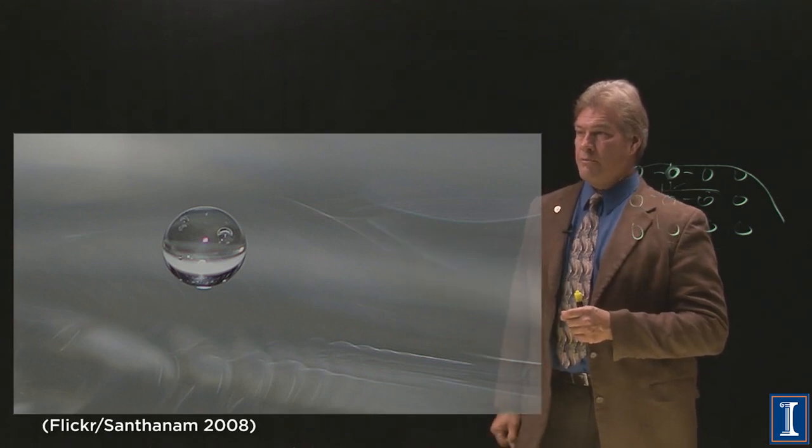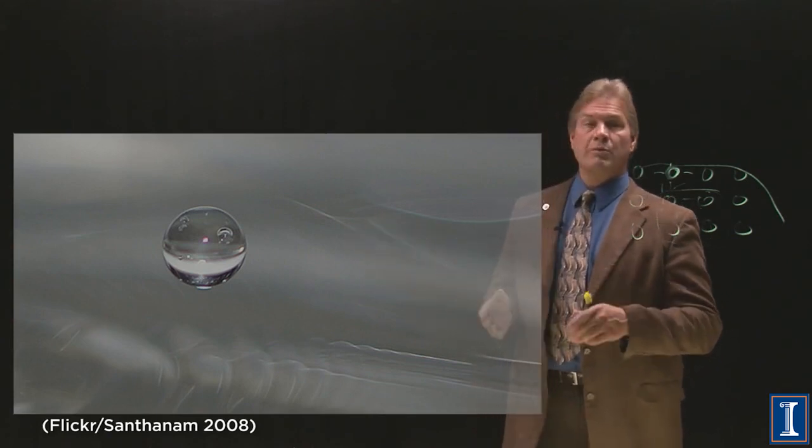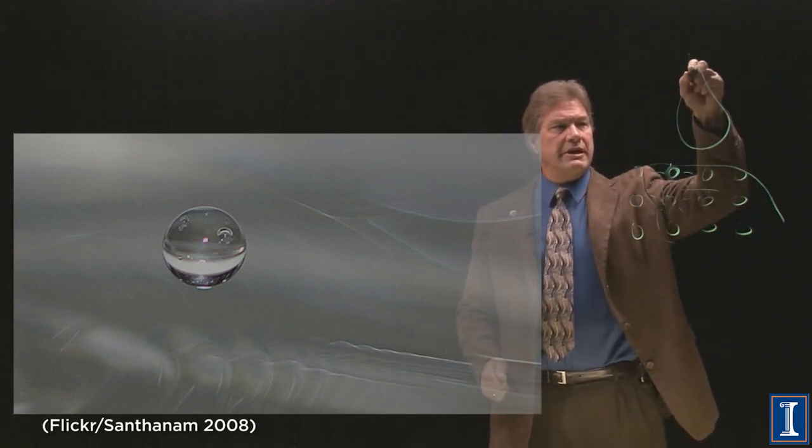So water likes to form a sphere. And if I have a droplet and I don't have an abnormal amount of gravity, some people say, oh no, water droplets look something like this.